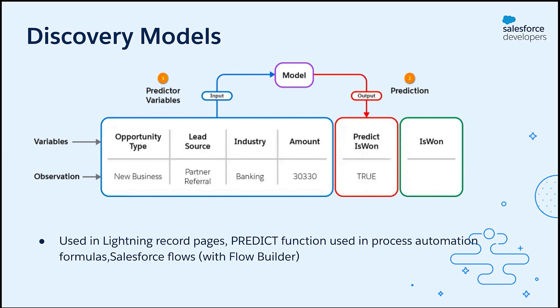A model accepts one or more variables as input and produces a predicted outcome. In this example, if you are using a model to predict the is-won field of an opportunity, it will take input variables, and based on the value of these variables, it will predict the is-won field of this record. Once the model is deployed, you can use it to retrieve and display predictions in lightning record pages as well as Salesforce flows. Now that we have a basic idea of what Einstein discovery is and how we can create stories and models, let's see the hack: discovery models in Salesforce flows.